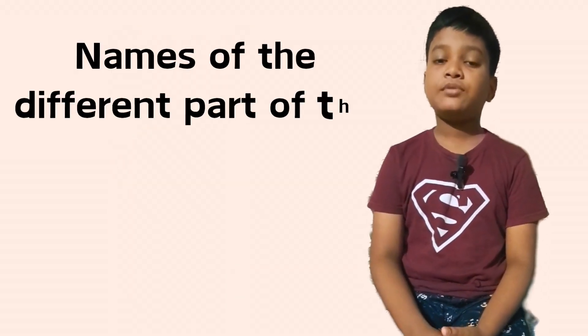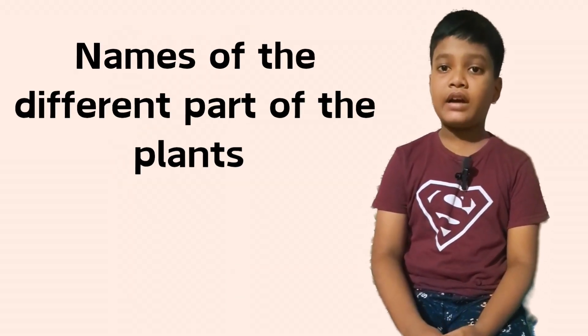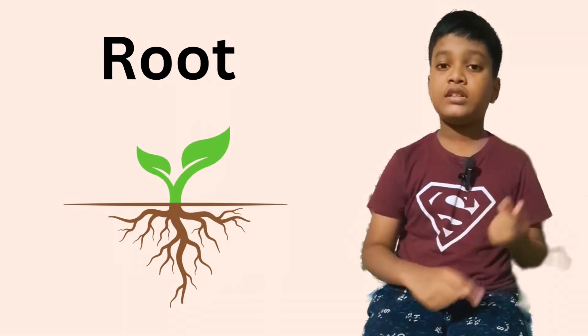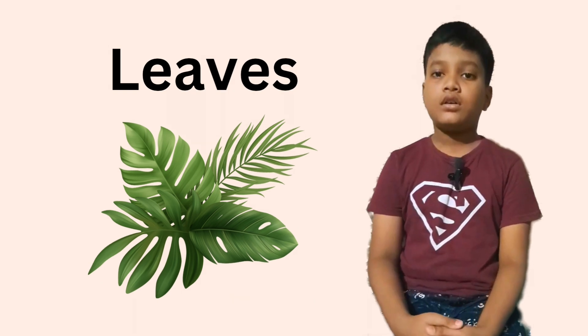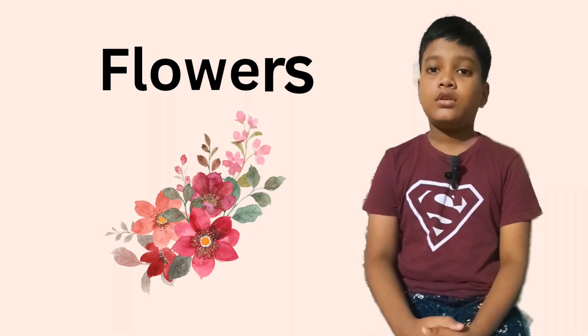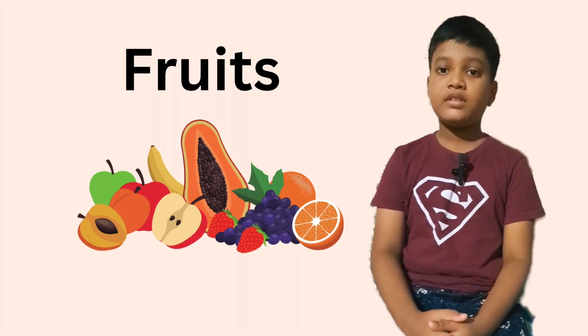The names of the different parts of the plant are: Roots, Stem, Leaves, Flowers, and Fruit. Roots help the plant to stay fixed in the soil. The stem holds the plant upright. The leaves prepare food for the plant in the presence of sunlight, air, and water.